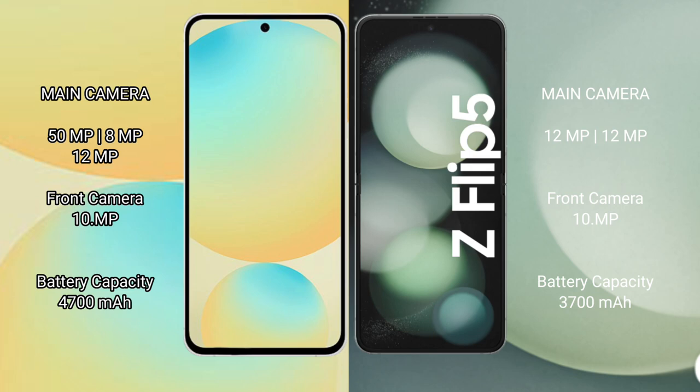Samsung Galaxy S24 FE has a triple camera setup: 50Fxl plus 8GB xl plus 12GB xl, with a front camera of 10GB xl. Samsung Galaxy Z Flip 5 has a dual camera setup: 12GB xl plus 12GB xl, with a front camera of 10GB xl.